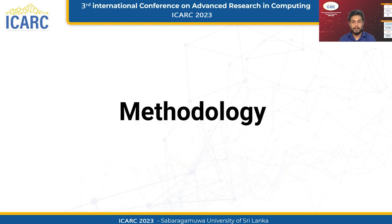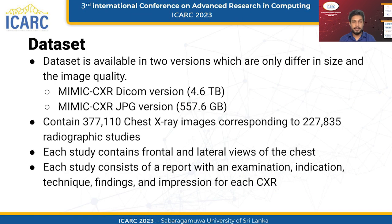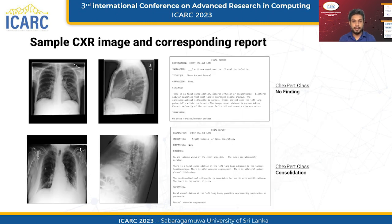In this research, we used the MIMIC-CXR dataset, which is available in two versions differing in size and image quality. The first version is the MIMIC-CXR DICOM version, which has a size of almost 4.6 terabytes, while the other version is in JPEG format and has a size of about 557.6 gigabytes. The dataset consists of 377,110 chest X-ray images corresponding to 227,835 radiographic studies, each of which includes frontal and lateral views. Here are a few sample images and reports from the MIMIC-CXR dataset. Each report consists of an examination, indication, technique, findings, and impressions for each chest X-ray image. Also, each image is classified under 10 classes using the CheXpert Labeler, and that class is also mentioned in the report.